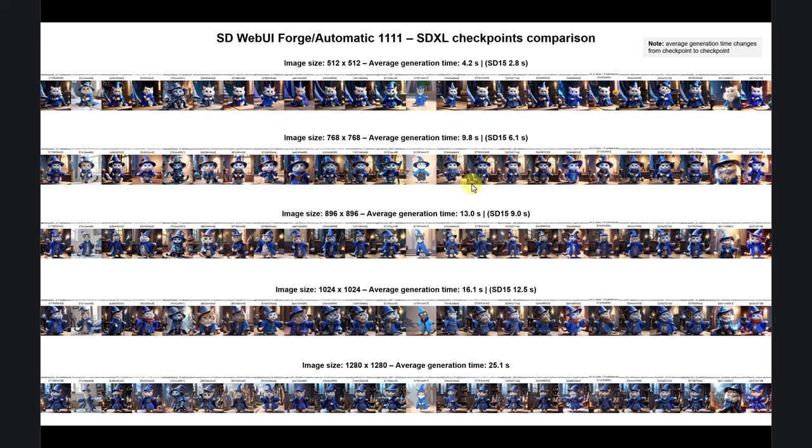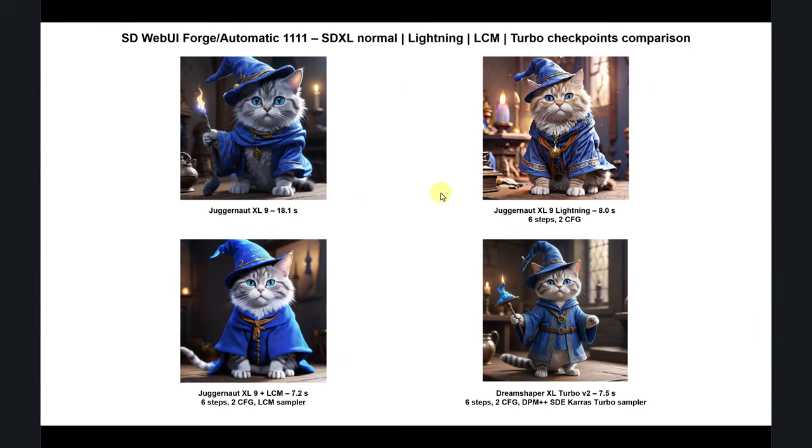Comparing SD XL and SD 1.5, you can see 1.5 is slightly faster, and the gap isn't huge. For cartoonish, anime, and digital illustration, SD 1.5 is unbeatable. For photorealism, SD XL is quite good but you can get similar results with 1.5. For upscaling, it's much easier to control ControlNet using 1.5 — we'll cover that in a future video.